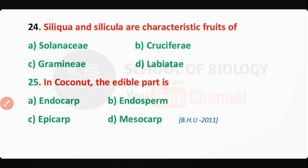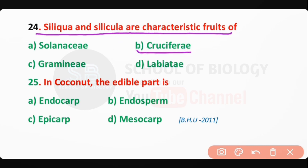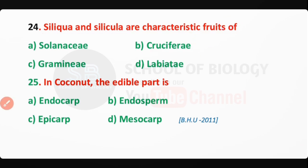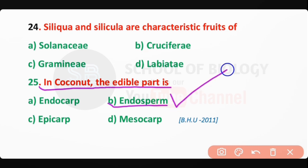Q24: Siliqua and silicula are the characteristic fruits of the Cruciferae family — correct answer is option B. Q25: In coconut, the edible part is actually the endosperm — correct answer is option B. So here are the 25 most important questions about different types of fruits.